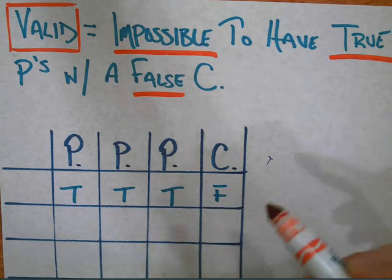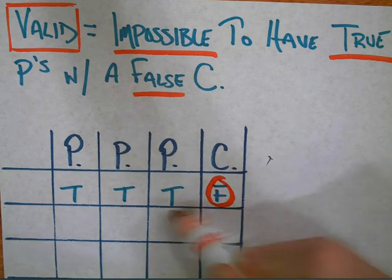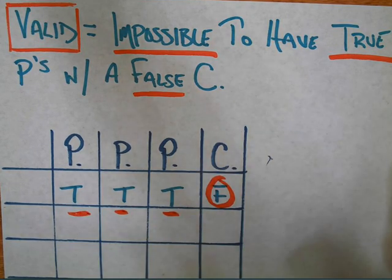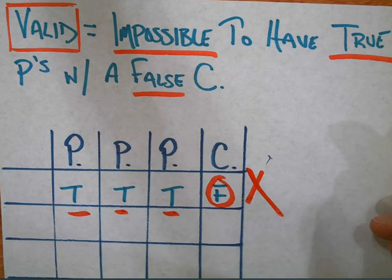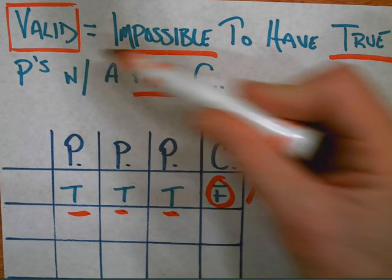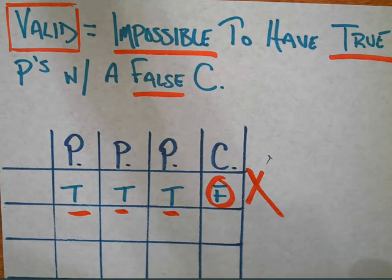But if we have a false conclusion and all true premises, then what do we automatically know? We automatically know that this is not a valid argument. Because a valid argument, by definition, is an argument where it's impossible to have true premises with a false conclusion.